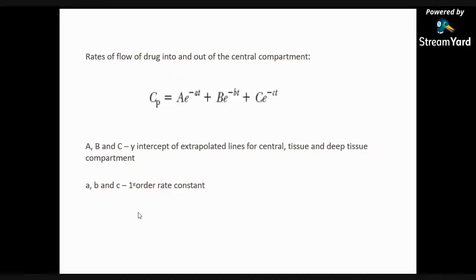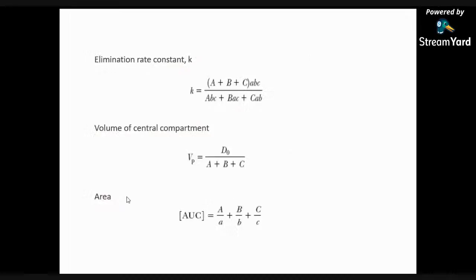The elimination rate constant k = (αβγ) / (αβ + βγ + γα). The volume of the central compartment is calculated by: Vp = D₀ / (A + B + C). The area under the curve can be calculated by: AUC = A/α + B/β + C/γ.